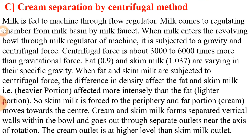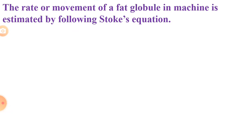In the centrifugal creaming method, milk is fed to the machine through a flow regulator. Milk comes to the regulating chamber from the milk basin by a milk faucet. When milk enters the revolving bowl through the milk regulator, it is subjected to gravity and centrifugal force. The rate of movement of a fat globule in the machine is again estimated by Stokes' law, as discussed in the gravity separation method.